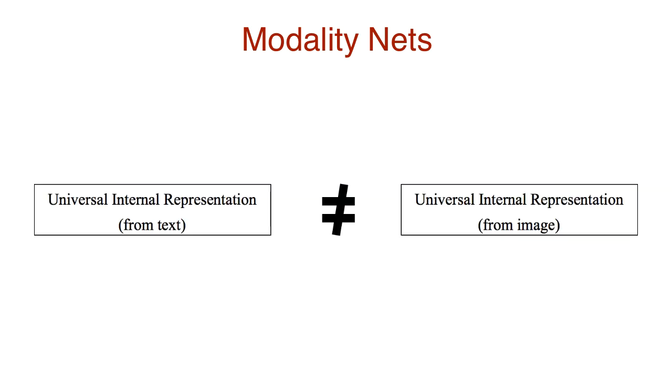Modality nets are designed to create different size universal representations for different domains. Having a fixed size representation can hinder performance anyways. I'll talk about the types of modality nets in a bit, but first let me explain the other parts of this network architecture.